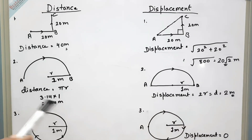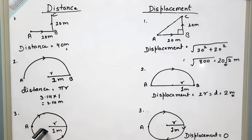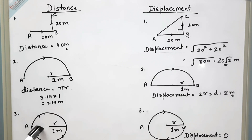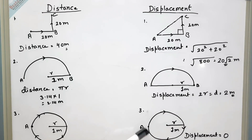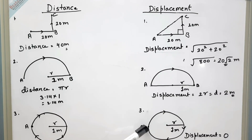In the third case, a particle starts from A and comes back to A along a circular path with radius 1 meter. The distance covered is the circumference, equal to 2 pi r, which is approximately 6.28 meters. Since the particle returns to its starting point, there is zero difference between initial and final position, so the displacement is 0.